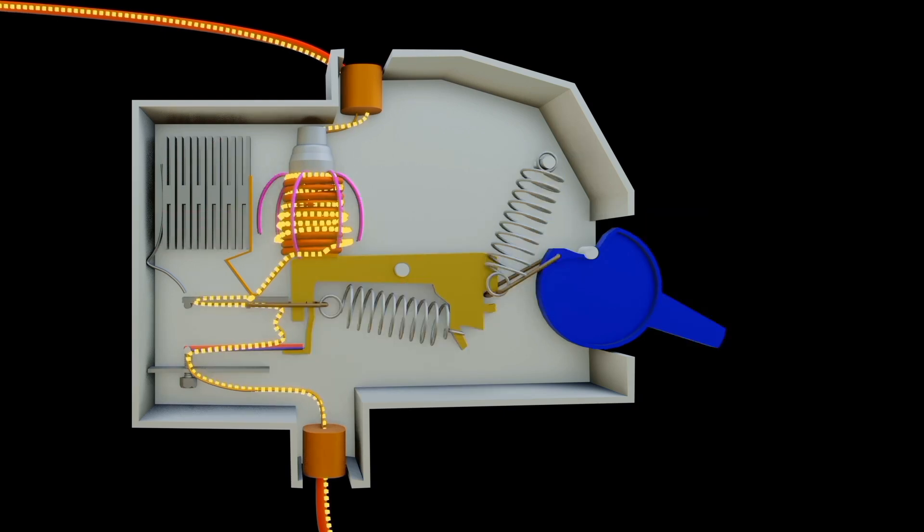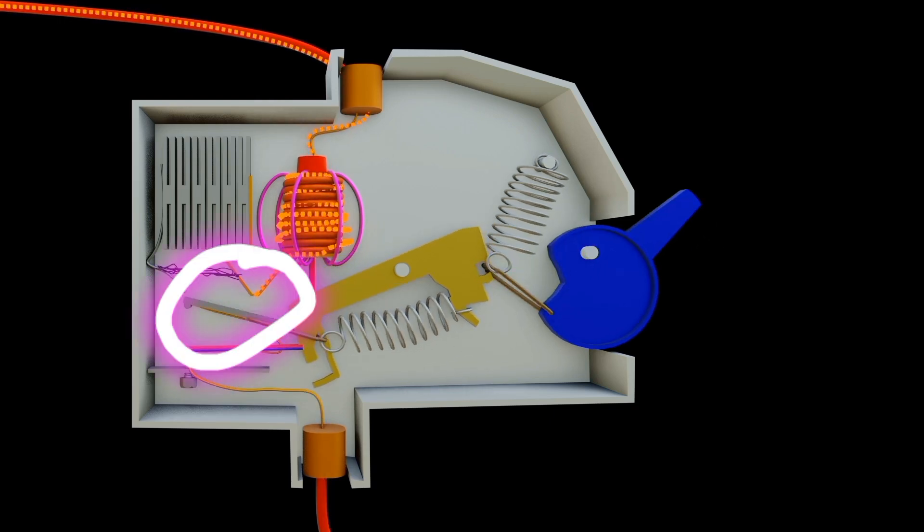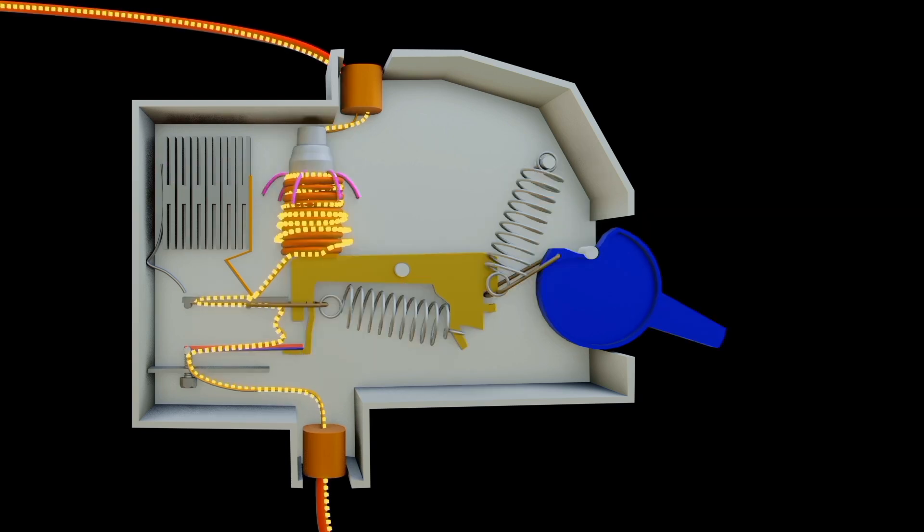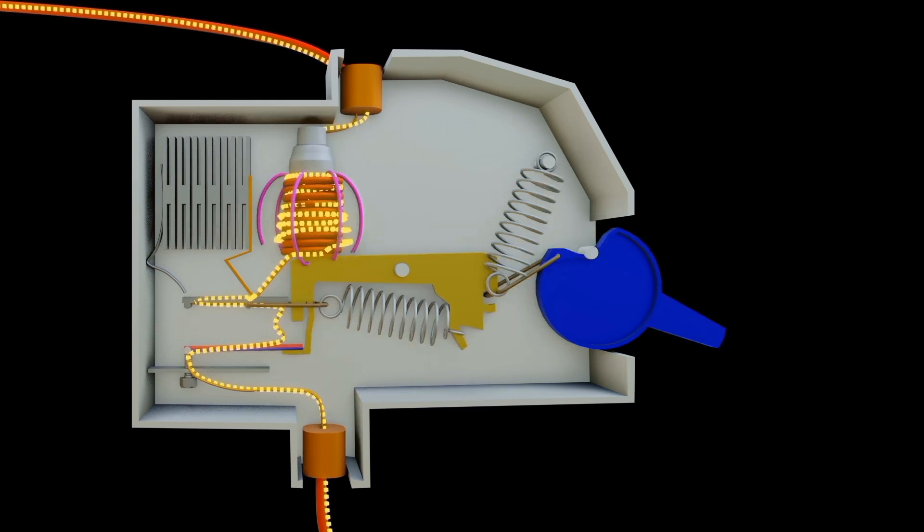But consequently large arc is formed as the contacts open. This arc is dangerous and can cause even fire. Hence an arc chamber is very useful in the design of circuit breaker. The arc chamber helps in extinguishing the arc. It provides a controlled environment where the arc is directed and cooled, allowing the circuit breaker to safely and efficiently interrupt the current flow.